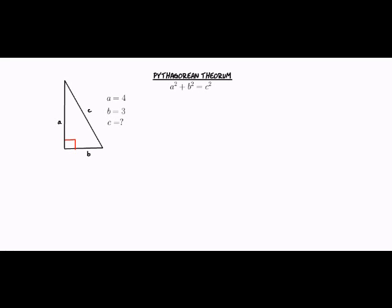And if we have that side A is 4, side B is 3, and we want to find side C, we're going to plug in our known quantities and get 4 squared plus 3 squared is equal to C squared. We're going to simplify that to get 16 plus 9, which is equal to 25, is equal to C squared.